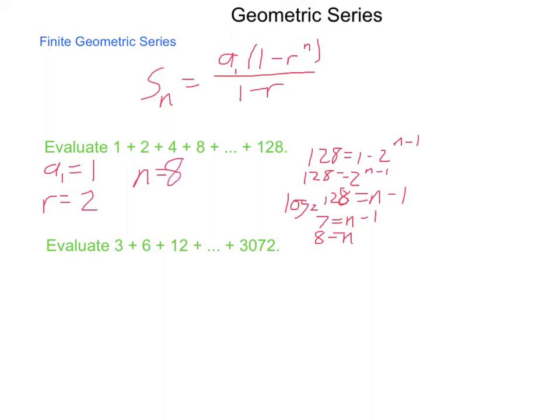We have 8 terms in this series. Now, solving or simplifying fully, we have s sub 8 equals 1 times 1 minus 2 to the 8th divided by 1 minus 2. That's going to give us 2 to the 8th is 256, so we'll have negative 255 divided by negative 1, which simplifies to 255. The sum of these 8 terms is 255.